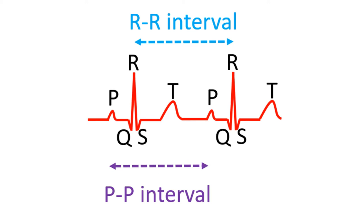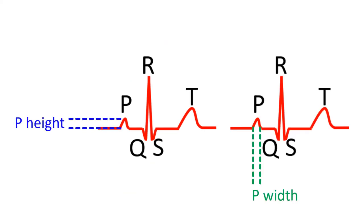Rate of P waves will give the rate of the upper chambers. Both the width and height of the P wave are measured to assess enlargement of the upper chambers or the atria. P is due to the electrical activity of the upper chambers known as atrial depolarization. A normal P wave in an adult has 2.5 mm as the upper limit for both width and height in a standard ECG recording at 25 mm per second paper speed.